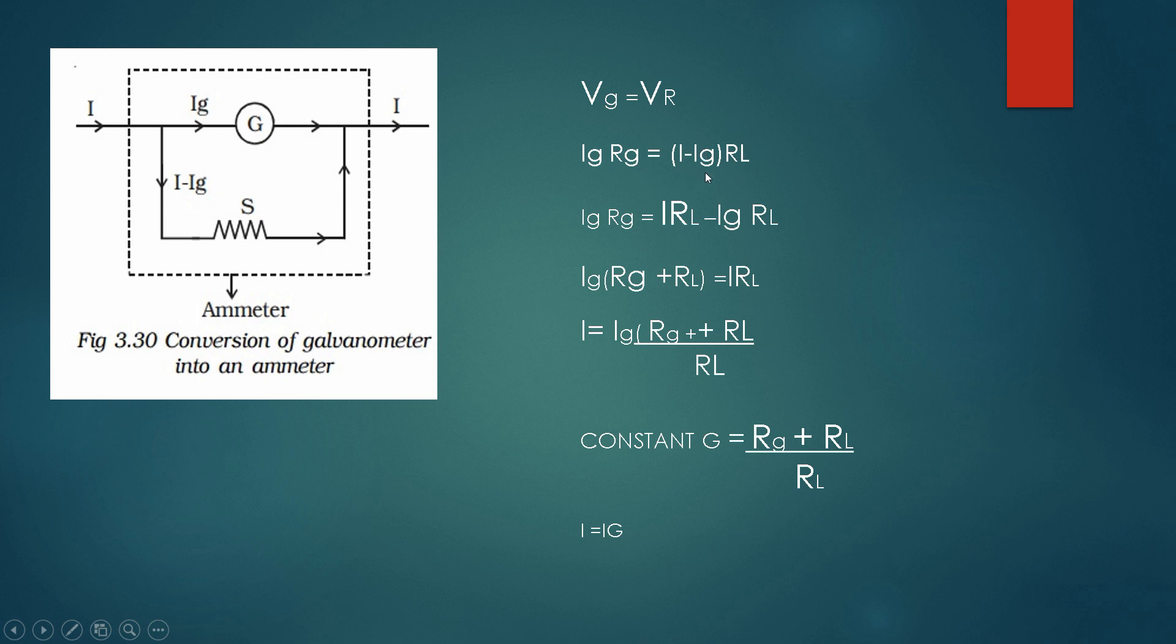Now, we are multiplying this RL inside. So we get IRL minus IG RL. Now, we are having both IG terms as common, so we are taking this IG to this side. We're taking IG as constant and RG plus, as the minus is coming over here, it will become plus. So galvanometer resistance plus low resistance equals IRL.